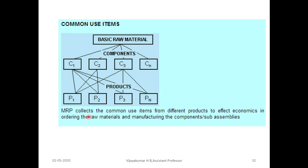Common use items: MRP collects the commonly used items across different products to achieve economies in ordering raw materials and manufacturing components and sub-assemblies. Some components are used across different products. For example, in products P1, P2, P3 through Pn, components C1, C2, C3 through Cn are commonly used items across all products and must be included and calculated in the MRP system.